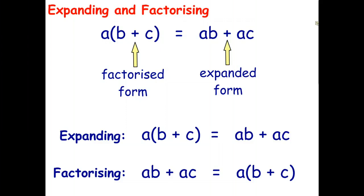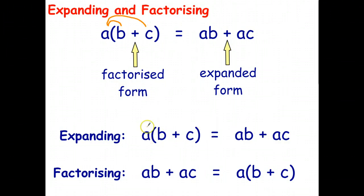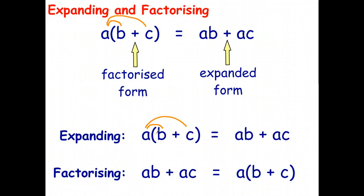We've already learned how to go from the factorized form to the expanded form by multiplying a×b and a×c — that's called expanding. What we're going to learn now is how to go backwards: given the expanded form, how do you turn it back into the factorized form?